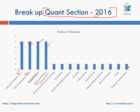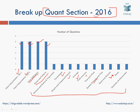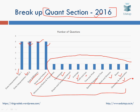There was one question each on all of the following general quant topics: mixtures, ratios and proportions, percentages, simple interest and compound interest, averages, profit and loss, time and work, speed, distance and time, boats and streams, races, and geometry and mensuration.